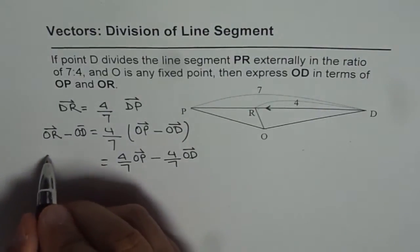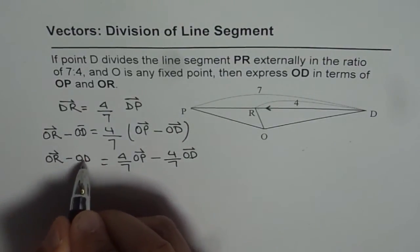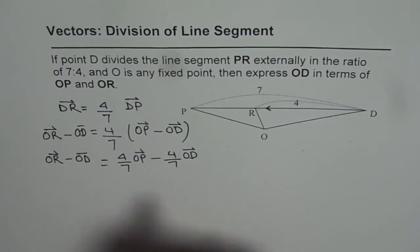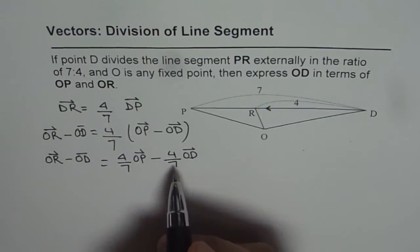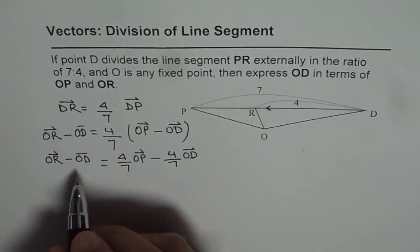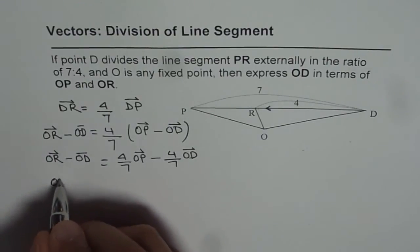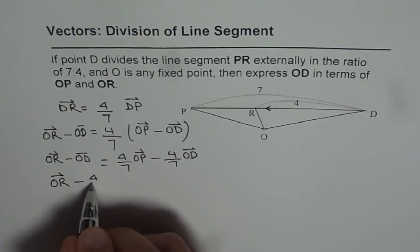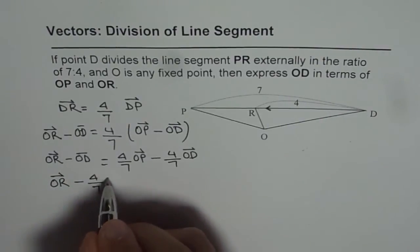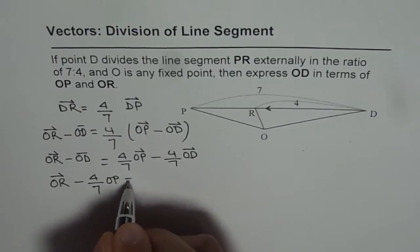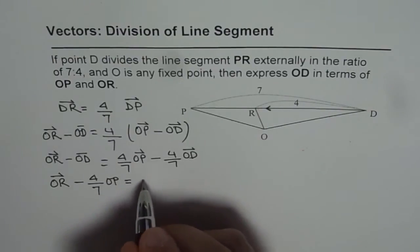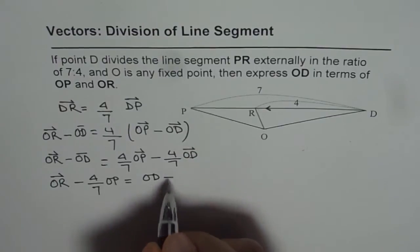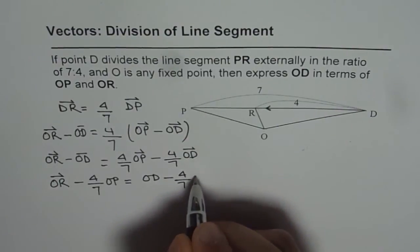And here we have OR minus OD. So, let us bring these terms together. So, we get OR minus 4 over 7 OP equals to OD minus 4 over 7 OD.